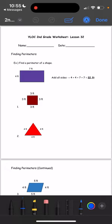Hi guys, welcome to lesson 32 of the second grade worksheet. Today we are going to learn how to find perimeters. Example: find a perimeter of a shape.